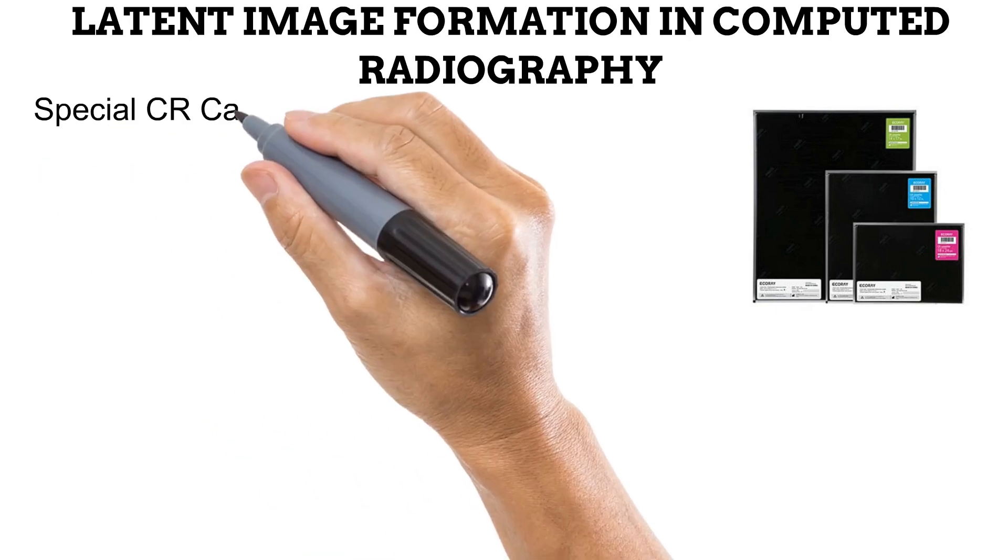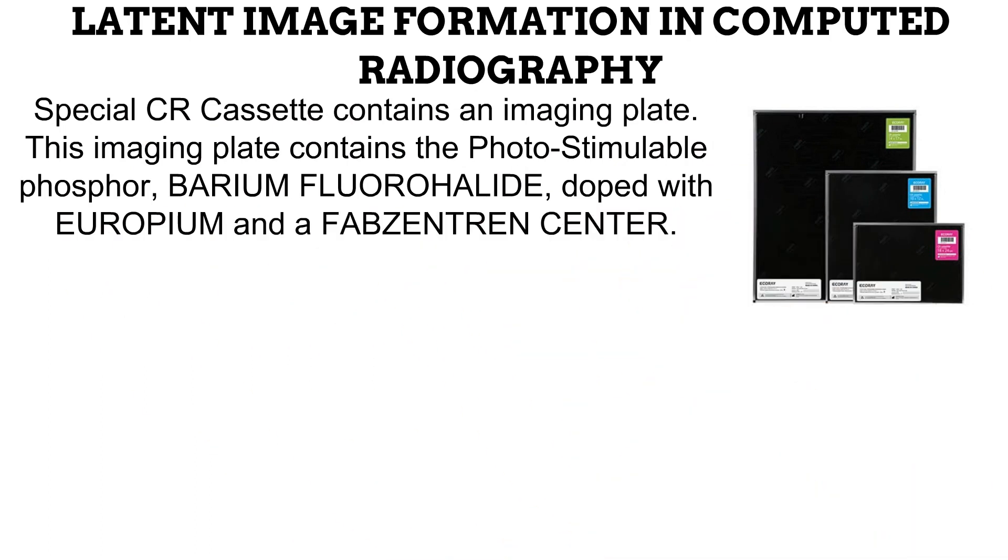That takes us to the process of latent or invisible image formation in computed radiography. What you have on your screen are different sizes of the type of cassettes or image receptors used in computed radiography. You would observe that they are very similar in appearance to the cassettes used in film screen radiography, and these cassettes will also fit into the same bucky trays as film screen radiography cassettes. However, unlike the film screen cassettes, these computed radiography cassettes do not house removable films. The radiographer has no reason to open these cassettes between examinations, like is done in film screen to place a new film for exposure. These computed radiography cassettes contain a structure called an imaging plate, which looks a lot like an intensifying screen and contains the photostimulable phosphor material, barium fluoroholite.